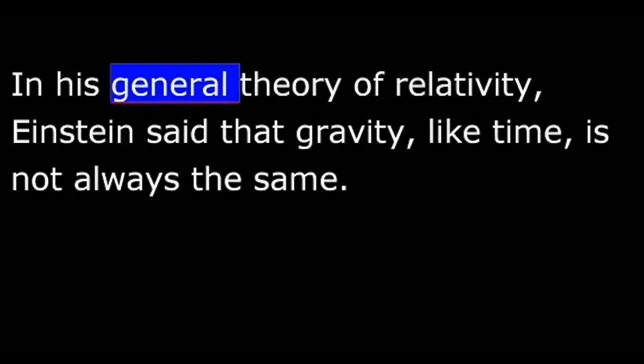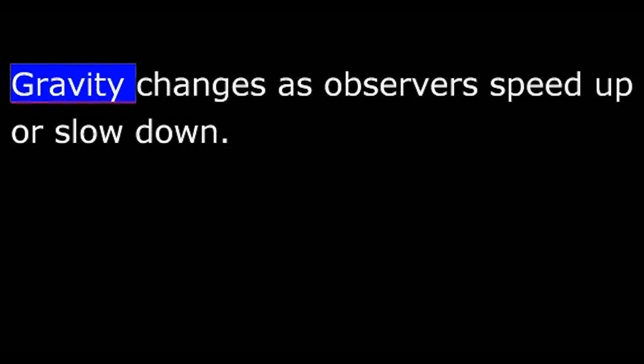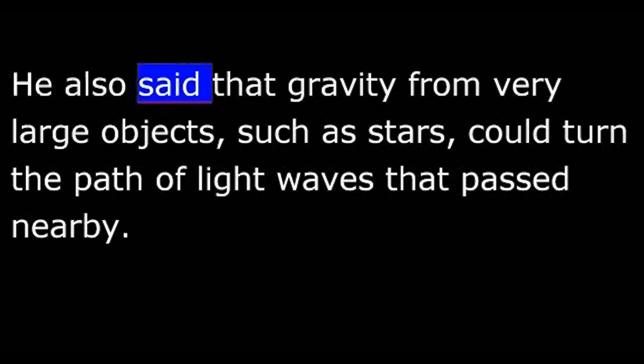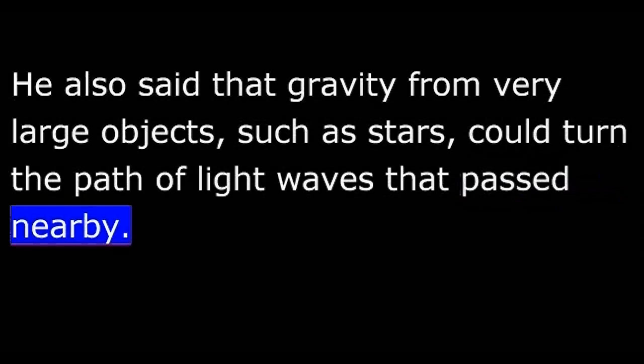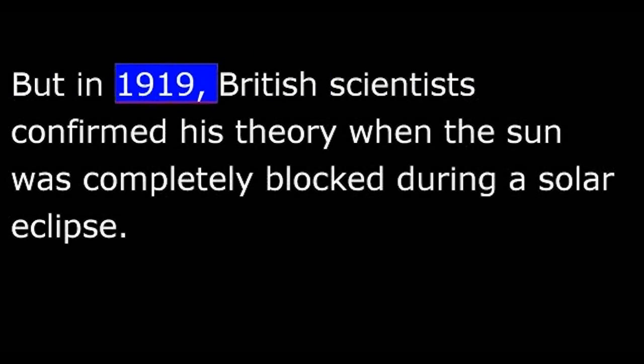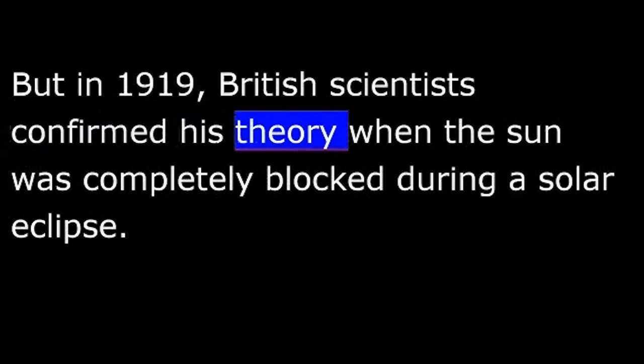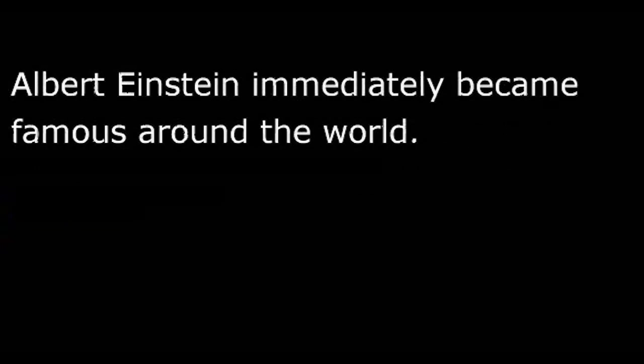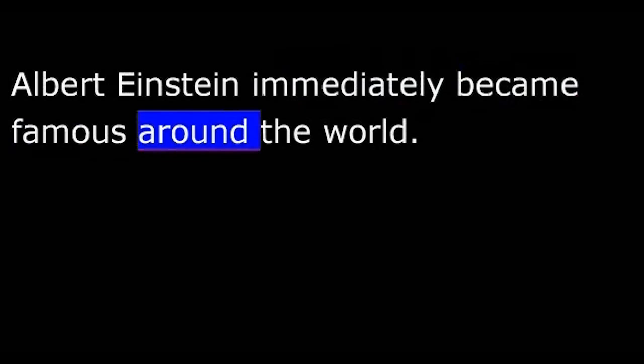In his general theory of relativity, Einstein said that gravity, like time, is not always the same. Gravity changes as observers speed up or slow down. He also said that gravity from very large objects, such as stars, could turn the path of light waves that passed nearby. This seemed unbelievable. But in 1919, British scientists confirmed his theory when the sun was completely blocked during a solar eclipse. Albert Einstein immediately became famous around the world.